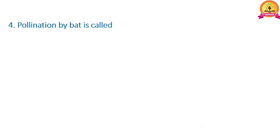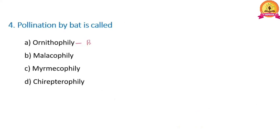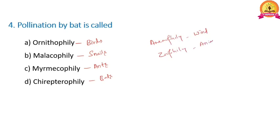The next question: pollination by bat is called what? Ornithophilia refers to pollination by birds. Malacophilia refers to pollination by snails. Myrmecophilia refers to pollination by ants. Chiropterophilia refers to pollination by bats. Additionally, anemophilia is pollination by wind, zoophilia by animals, hydrophilia by water, and entomophilia by insects. Here, pollination by bat is chiropterophilia, so D is the correct option.